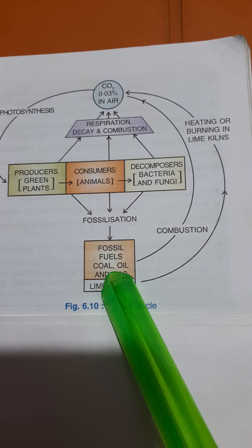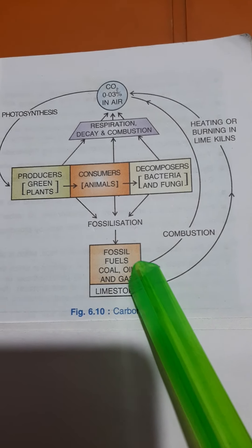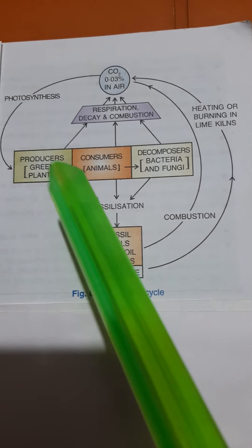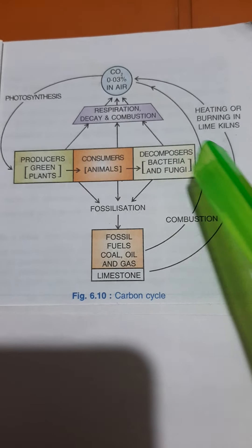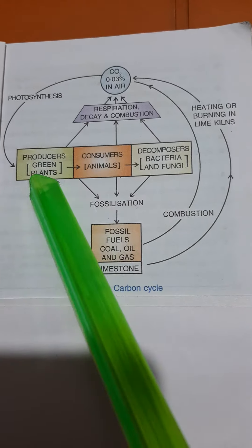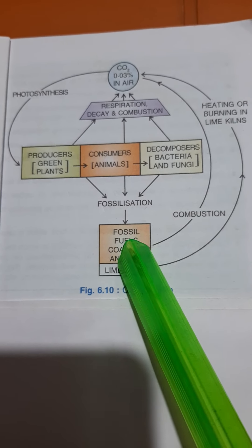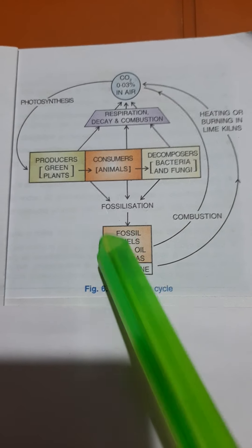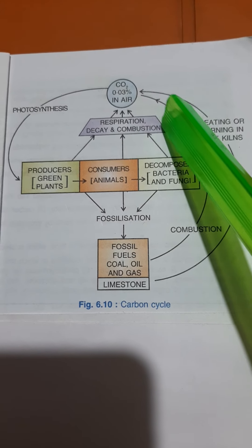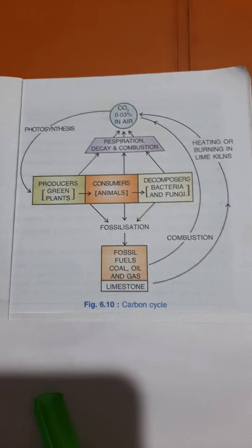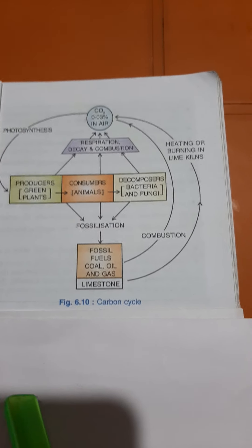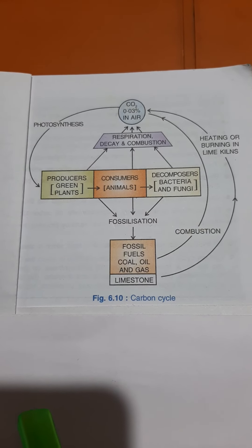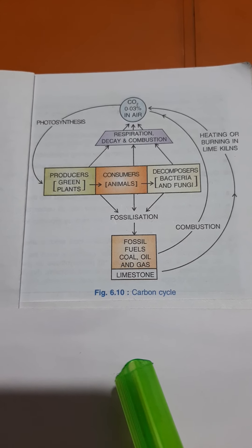Fossil fuels — coal, gas — are formed by fossilization. They become fossils, and this is how they become fossil fuels. When they undergo combustion, when they are burnt, carbon dioxide is released. So this is your carbon cycle. Thank you.